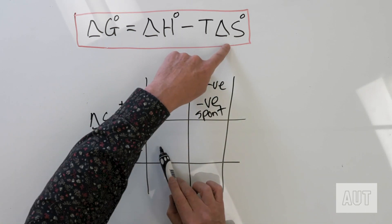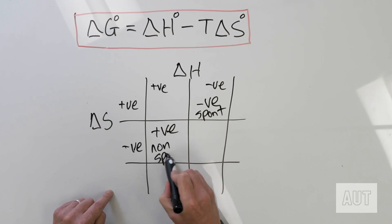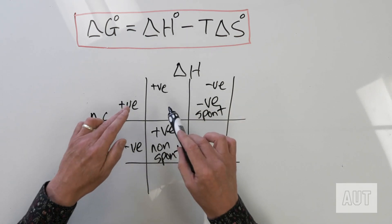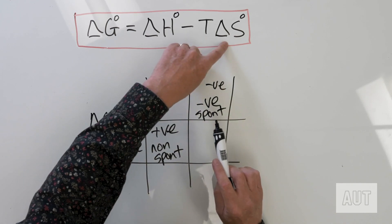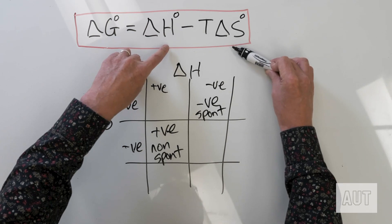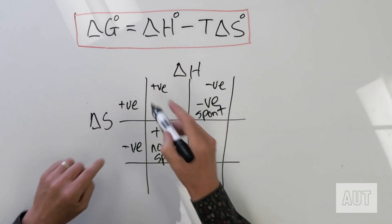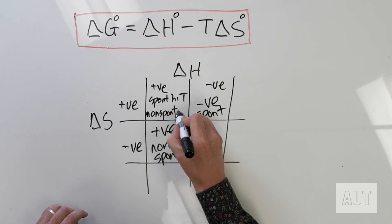What about when both have the same sign? If ΔH is positive and ΔS is positive, we have a positive minus a positive — that can be positive or negative depending on the relative sizes. This term is large if the temperature is high, so in that case positive minus positive gives a negative — meaning this scenario is spontaneous at high temperature and non-spontaneous at low temperature.